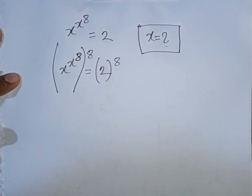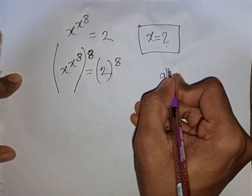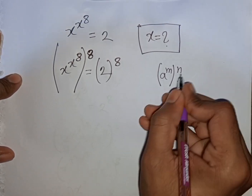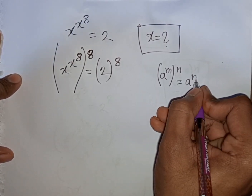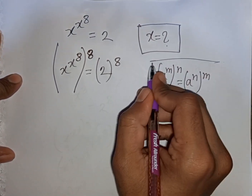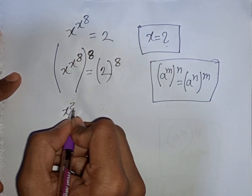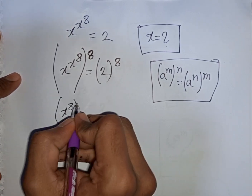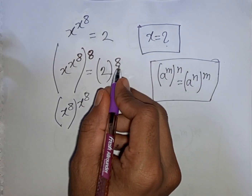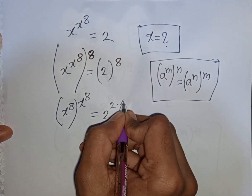Here we can apply the exponential rule that a power m, bracket power n, is equal to a power n bracket power m. According to this rule, we can write x power 8, then bracket power of x to the power 8, is equal to 2 power 8, which can be written as 2 power of 2 times 4.